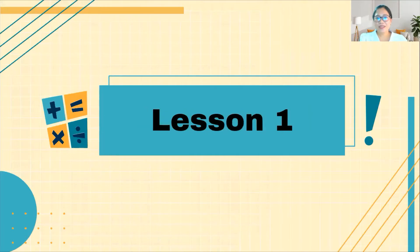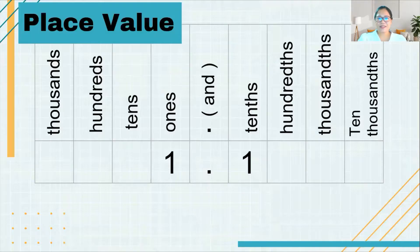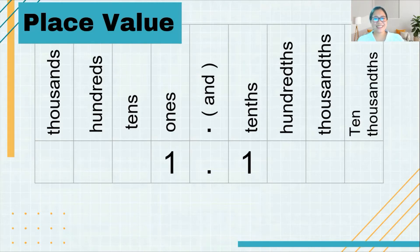Now let's start with our lesson. For lesson number 1, I will be teaching you how to read decimals. In order to read decimals, we need to study first the place value. I guess you already know the different place values since you learned this in your Primary 1, 2, and 3 class. Let's have a short review about place value.